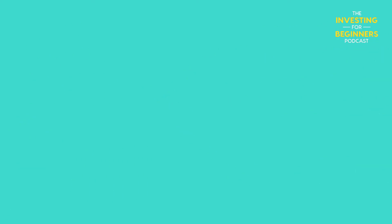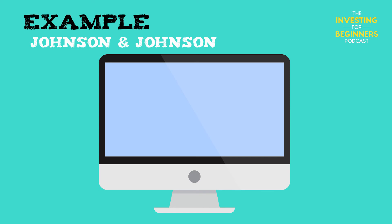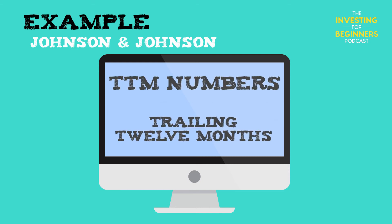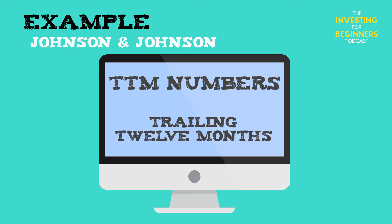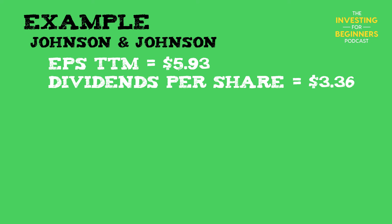Let's get to some examples so we can see how this works. The first company we will select is Johnson & Johnson. We will need to gather a little background information to plug into our formula. To find most of this info, I use gurufocus.com, which is a freemium site that allows you to gather the most recent data for our formula. All these numbers will be gathered on the 30-year financial data page. We will use TTM numbers, or trailing 12-month numbers, as they give us an average over the last 12 months. Johnson & Johnson: EPS TTM equals $5.93, and dividends per share equals $3.36.